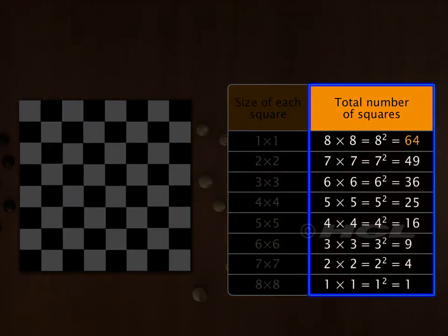Note that the numbers 64, 49, 36, etc., are obtained by multiplying a number by itself. Such numbers are called square numbers. Isn't it amazing that the number of squares of each size on the chessboard is a square number?